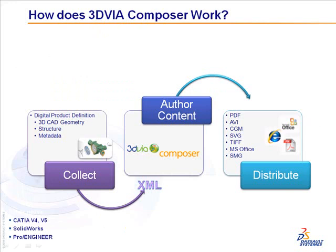3D Via Composer works by first collecting the digital product definition — which is the geometry, custom properties, and BOM structures from CAD and/or from PDM or other business systems — and then representing this data in a lightweight XML structure. The 3D Via Composer user can then author graphical content and create exploded views, detailed views, animations, and so on directly from this 3D data.